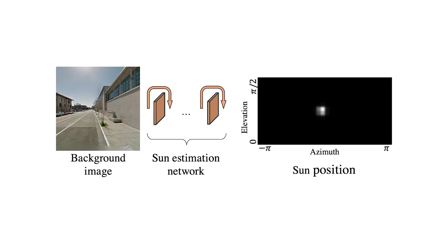The sun estimation network takes the input image and predicts two vectors, one for azimuth angle and one for elevation. Here we visualize the estimated sun position as a 2D distribution formed by the outer product of the two vectors.